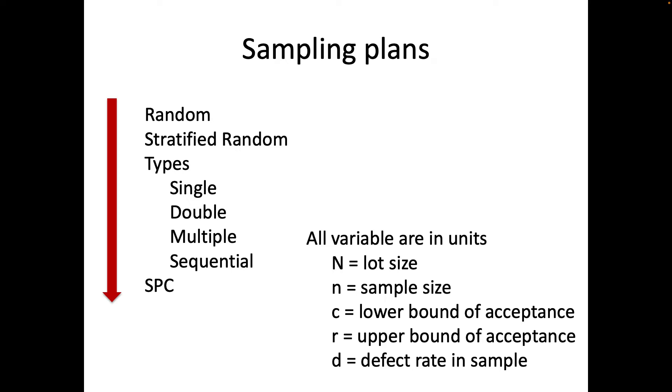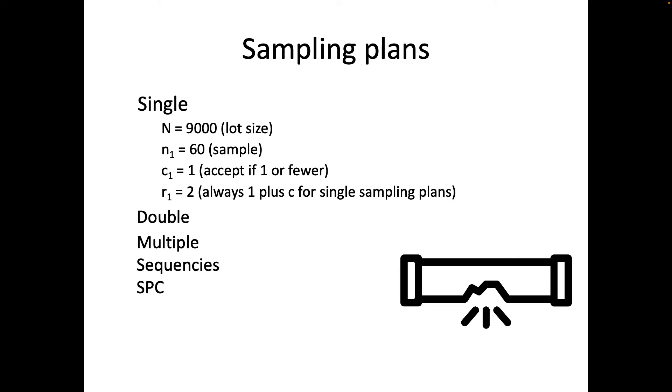Sampling plans: you can do a single, a double, multiple, sequential and then you could also do a statistical process control or control chart. For us we have these items defined as a lot size, the sample size, the lower bound of acceptance, the upper bound of acceptance and the defect rate in the sample. Let's just look at an example. We have a lot of 9,000, we're going to take a sample of 60 and the C is going to be 1, which means that if it's 1 or fewer, then we will accept it. If it's 2 or above then we will reject it. In a single sampling plan, R is always C plus 1.